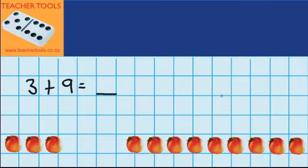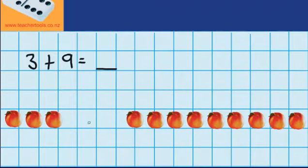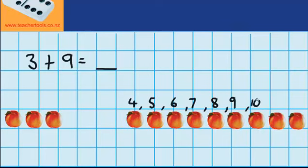Well to start with, let's try solving this problem just by counting on from the smallest number. So, if we've got three apples here, this would be our fourth apple, fifth apple, sixth apple, seventh apple, eighth apple, ninth apple, tenth apple, eleventh apple, and twelfth apple.